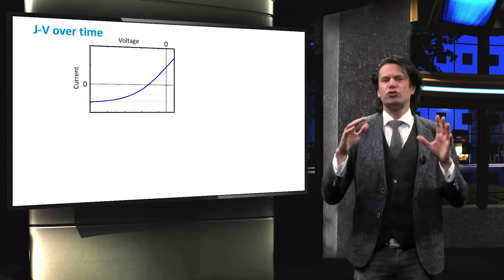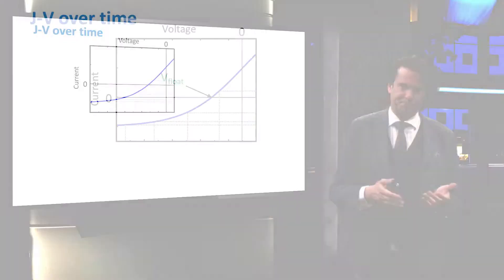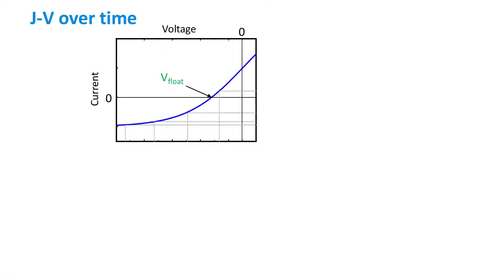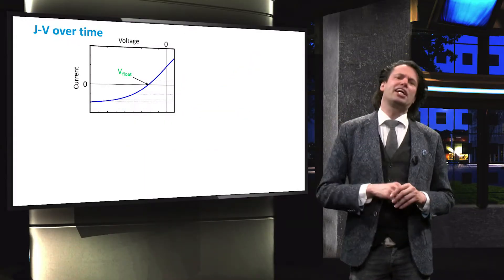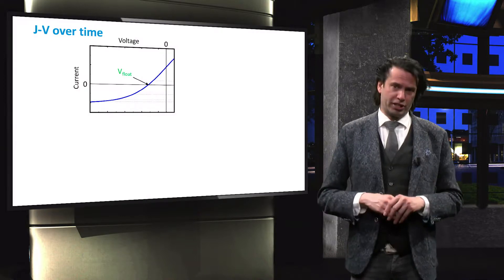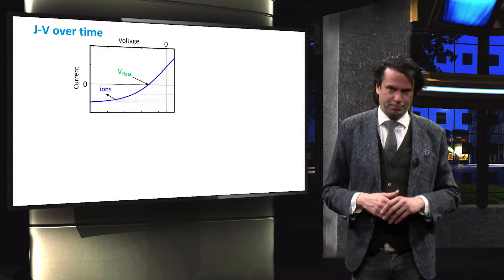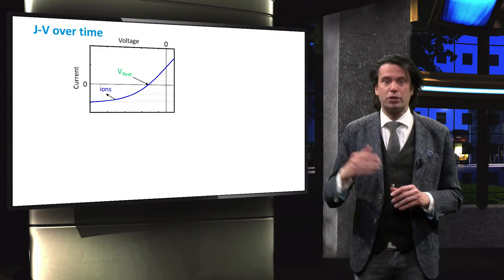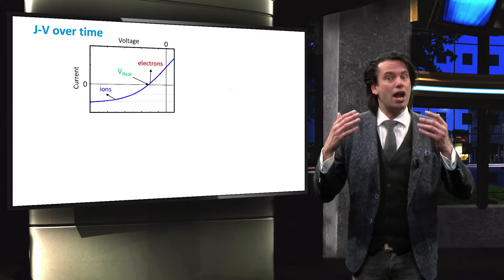This graph shows the current-voltage curve at the powered electrode. At the floating potential, the net current is zero, so the electron flux and the ion flux are at equal magnitude. When the voltage at the electrode is below the floating potential, the electrode experiences a current of ions. At a voltage above the floating potential, the electrode experiences an electron current.